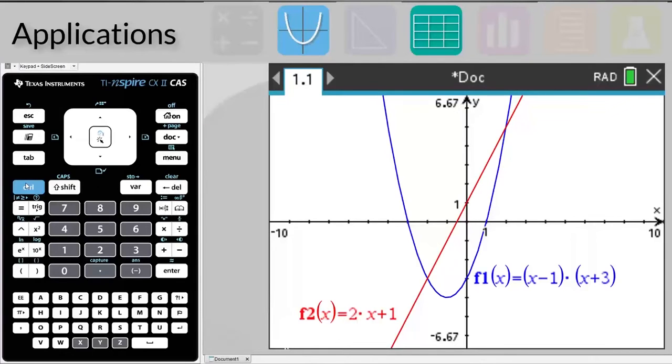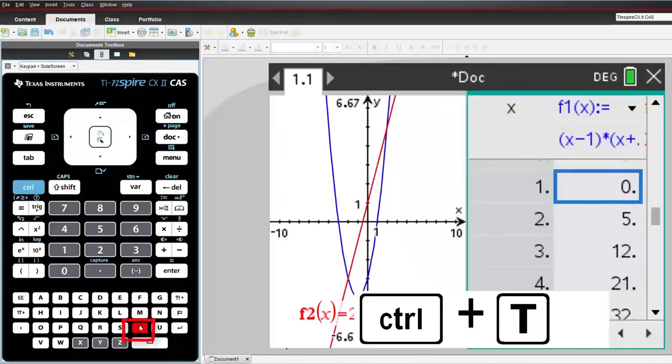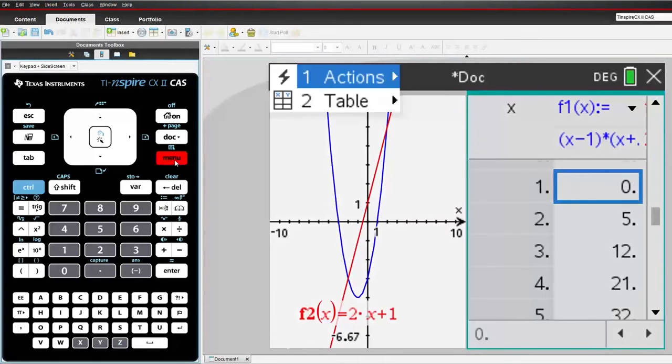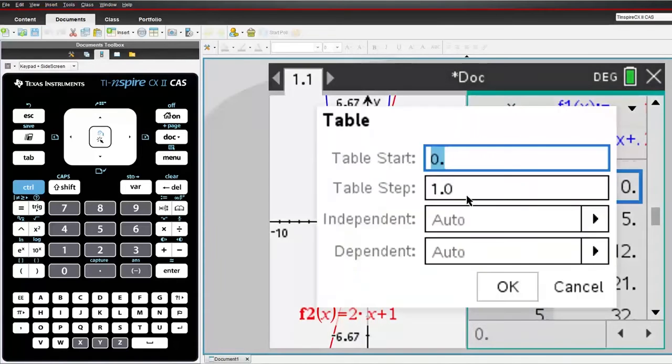Suppose you've just graphed an equation or equations and you want to see a table of values. Press CTRL and T to switch the table on. You can change the start value, step value, or even decide whether or not the calculator prompts or generates them automatically. In this case, I've got two functions.